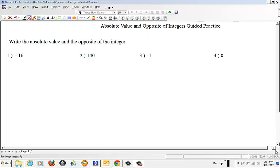So we have: find the absolute value of negative 16 and find the opposite of negative 16. Find the absolute value of 140 and then find the opposite of 140. Find the absolute value of negative 1 and the opposite of negative 1, and last, find the opposite of 0 and the absolute value of 0. So go ahead and pause the video and I will see you when you finish.